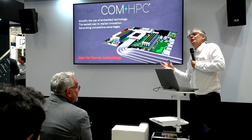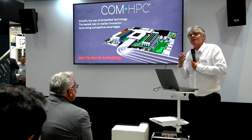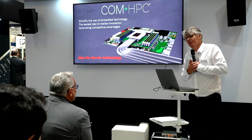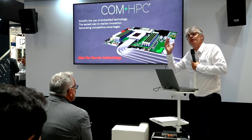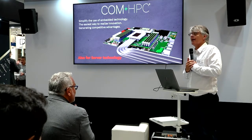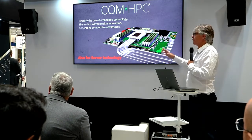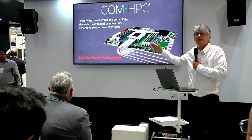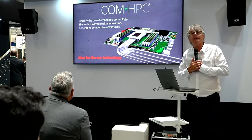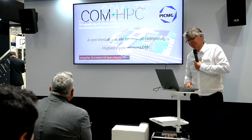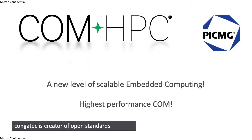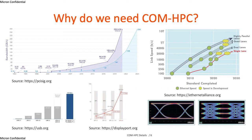Servers must move to where the data happens, and that place is not always a friendly environment. Think about a 5G base station - it's somewhere outdoors. If you have to install climate cooling, it's going to be expensive. But if you have a rugged module that can survive from plus 85 down to minus 40 degrees, that's a big advantage. COM HPC is not a replacement for the existing COM Express - it's really a new class that goes on top.